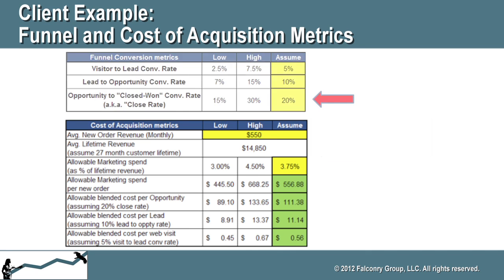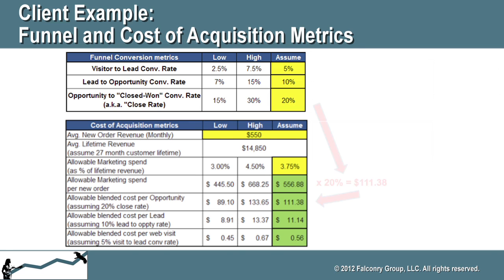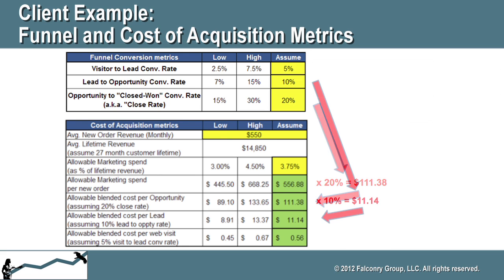Second, we gathered marketing and sales metrics like close rate and lead conversion rate from the client, and used industry averages or other research to fill in any gaps. Third, we combined the marketing allowance with the funnel metrics to derive spending targets for each layer of the funnel.